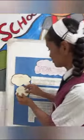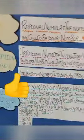Irrational numbers: in addition to rational numbers, there are many more numbers on a number line. Those are called irrational numbers.